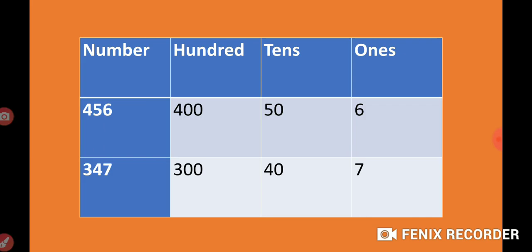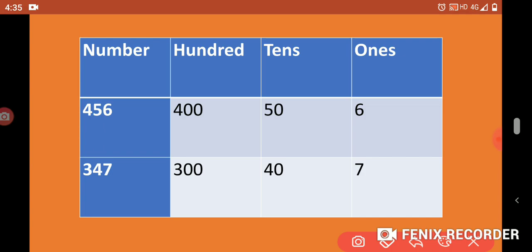Another example of expanded form. Let's take 455. 4 is in 100's place, 5 is in 10's place, and 5 is in 1's place. So we write 400, 50, and 5. The expanded form of the number is 400 + 50 + 5.